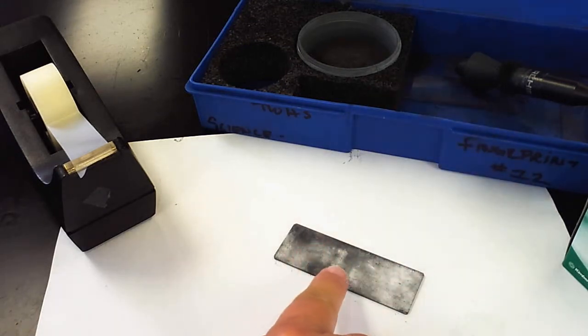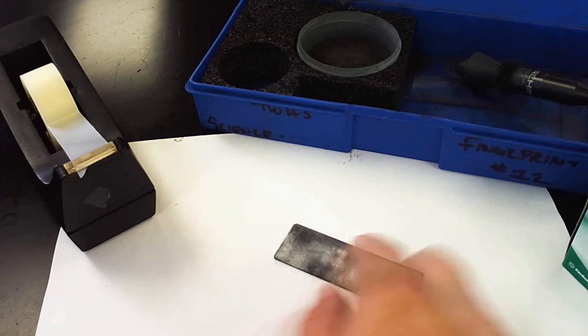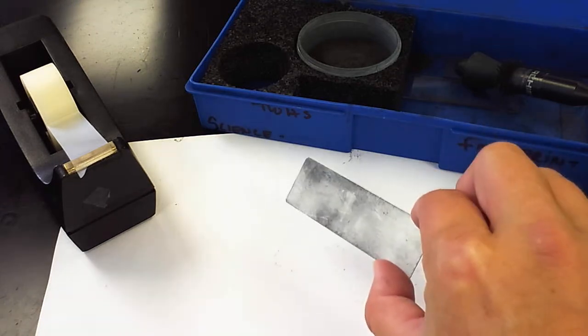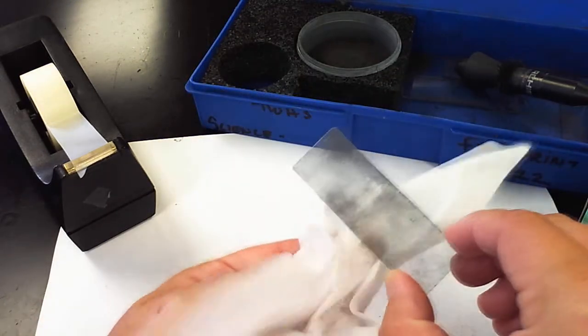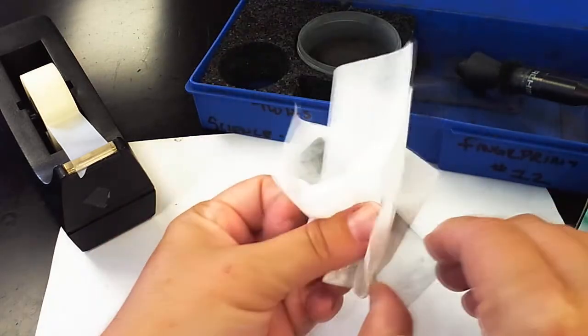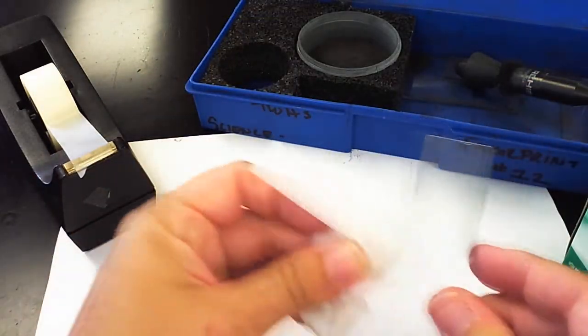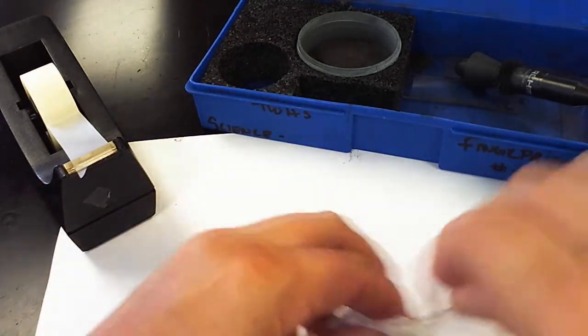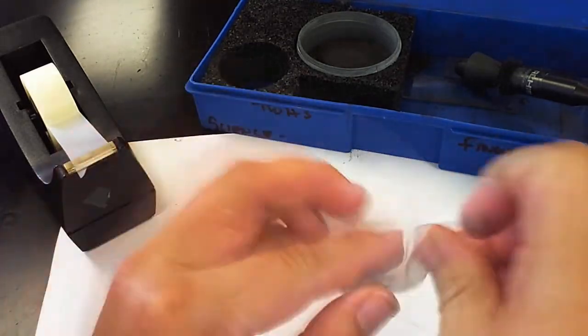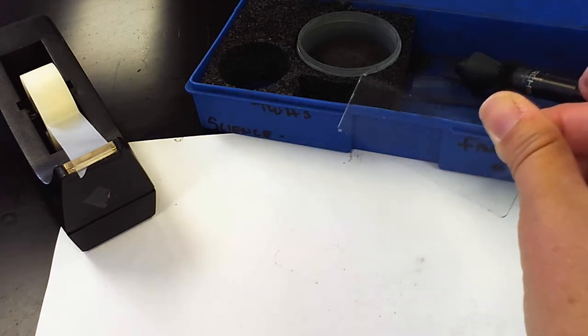So we're going to be leaving our fingerprints on these microscope slides. You can tell this slide is pretty dirty. So the first thing you want to do is clean it off. Go ahead and use one of those chem wipes to really wipe that down so that you have a nice clean slide to work with.